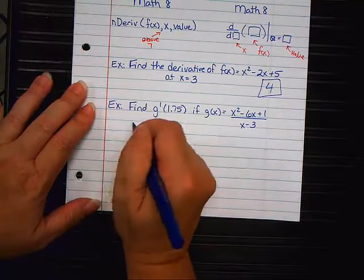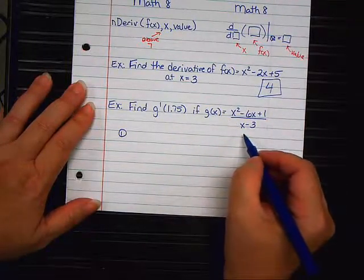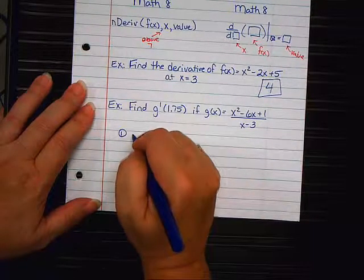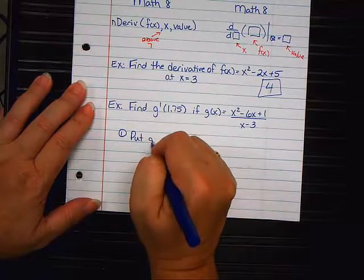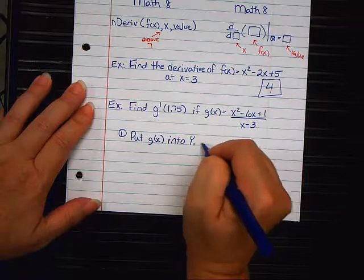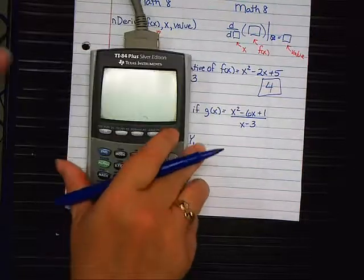So, here's what I want to show you. This is another way you can do it. Instead of typing this into the N-deriv parentheses or into the parentheses here, we're going to put the function G of X into Y1. And I want everybody to do this right now. Put G of X into Y1.